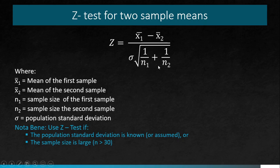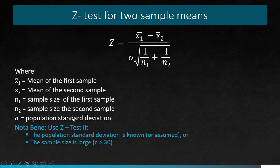For the variables: x-bar subscript 1 is the mean for the first sample, x-bar subscript 2 is the mean of the second sample, n subscript 1 and n subscript 2 are the sample sizes for the first and second sample respectively, and sigma indicates the population standard deviation. We use the Z-test when the population standard deviation is known and the sample size is large — greater than or equal to 30.